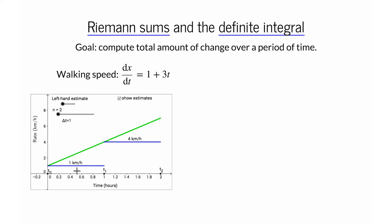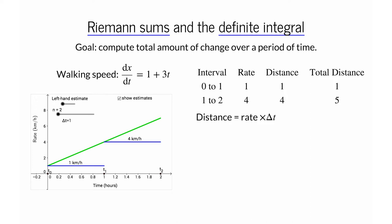In this imaginary exercise, we don't have you change speed until the second interval, beginning at hour one. During this second interval, you will again walk at a constant speed — the constant speed from the beginning of this interval, which in this case is four kilometers per hour. We are approximating the green curve by two blue horizontal line segments. From hour zero to one, we assumed you walked at one kilometer per hour; multiplying the rate by delta t equals one, we get one kilometer. From hours one to two at four kilometers per hour, we get four kilometers. The total distance is one plus four equals five kilometers.